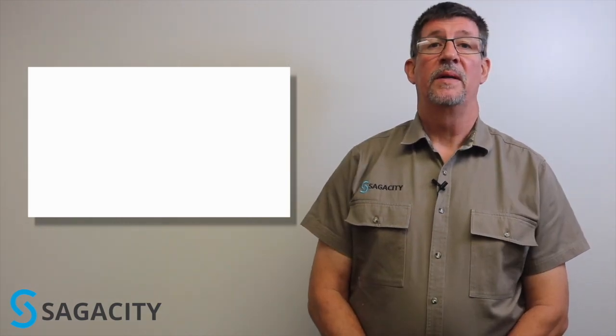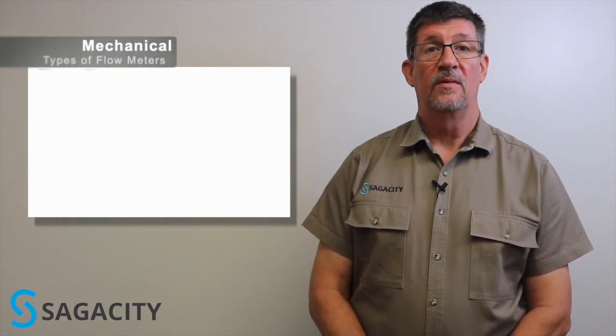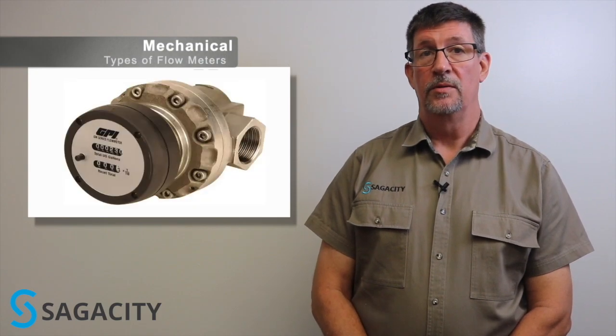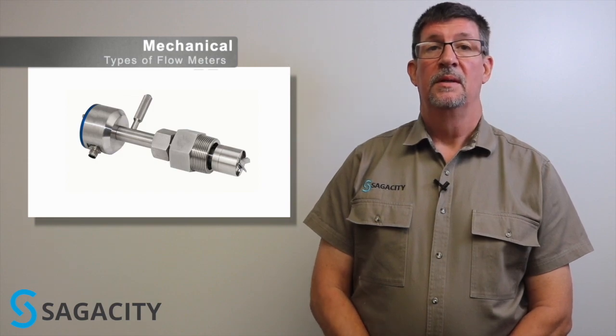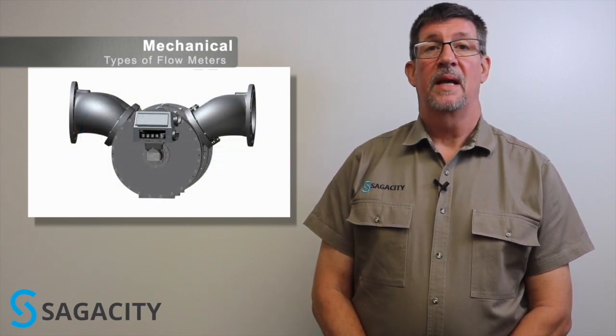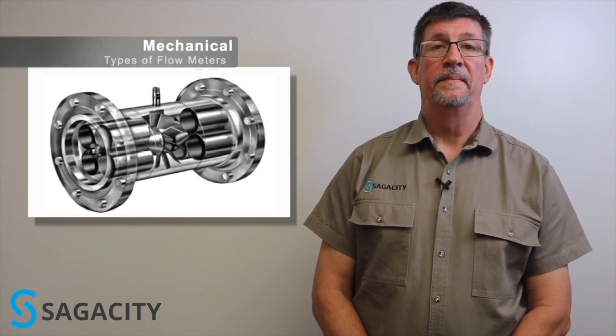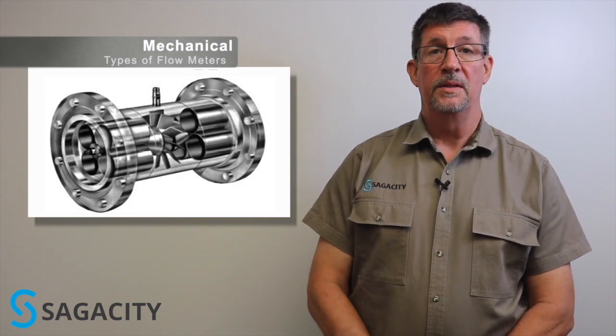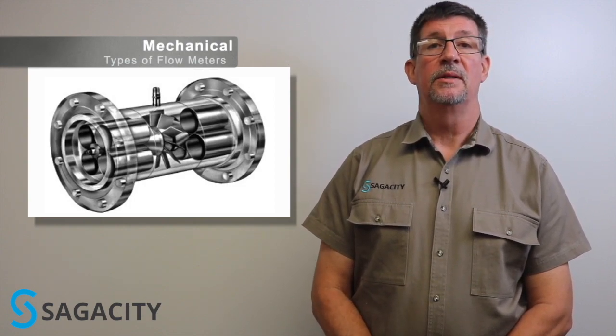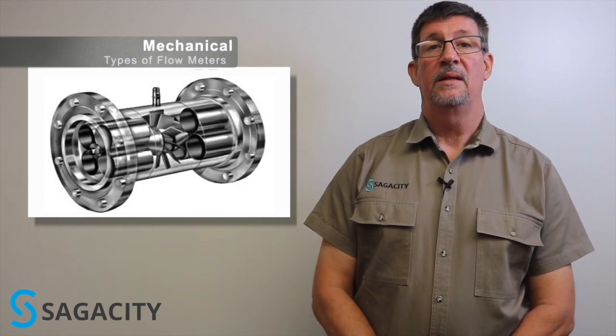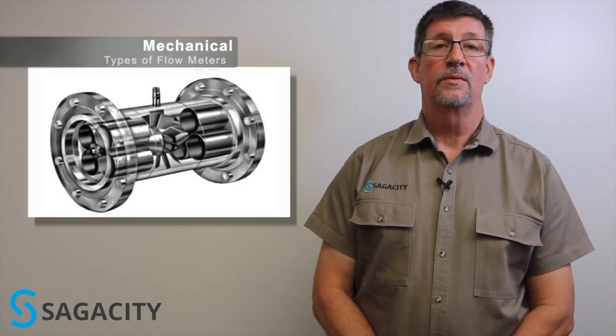The next type of flow meter is mechanical flow meters. These include positive displacement meters like bi-rotors and oval gears, as well as turbine meters, paddle meters, and vane-type meters. These are mechanical devices and we're typically counting the number of times the mechanism rotates in relation to the flow stream. Counting the number of pulses given off by that rotation is how we calculate the velocity of the fluid.